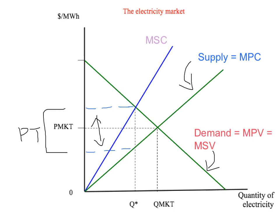In other words, the optimal tax is equal to the marginal external cost of pollution — the negative externality on the marginal unit at the socially optimal quantity. So the government can solve the problem of excessive pollution and the negative externality by going out and measuring the marginal social cost of pollution, working out the optimal tax, and putting it in place.